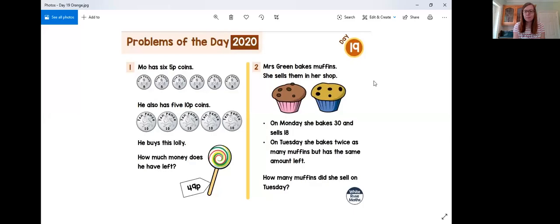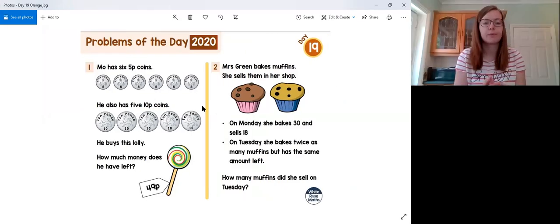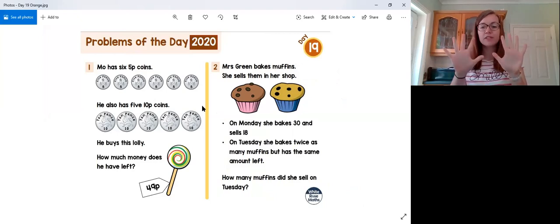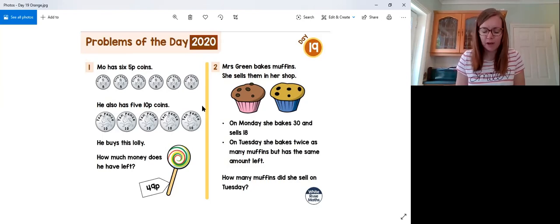We're going to start as ever with the orange questions of the day. So let's have a look here at this money question. So Mo has six 5p coins and five 10p coins. He buys this lolly, which is labelled as 49 pence. How much money does Mo have in 5p coins?